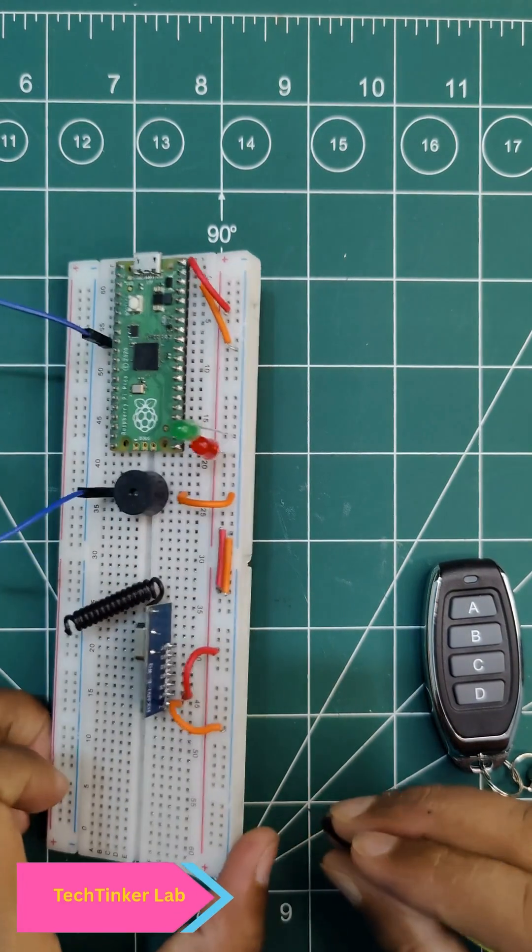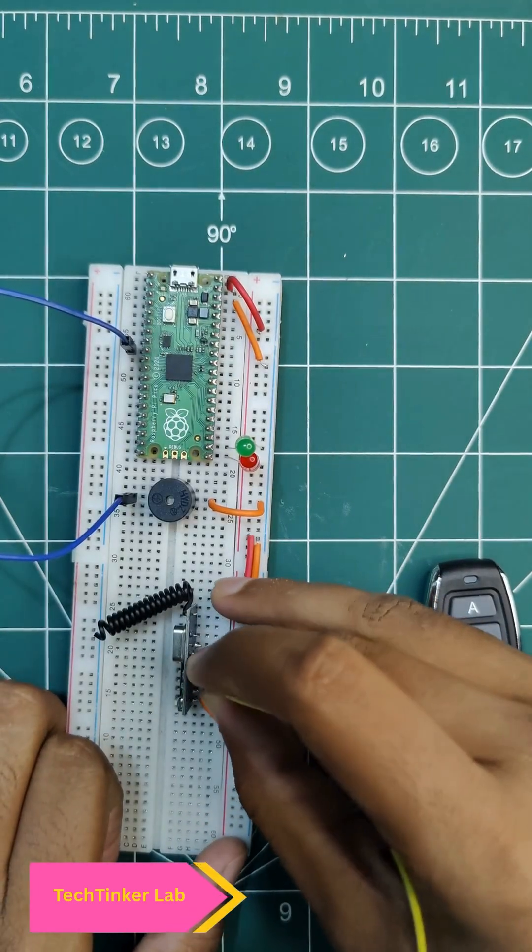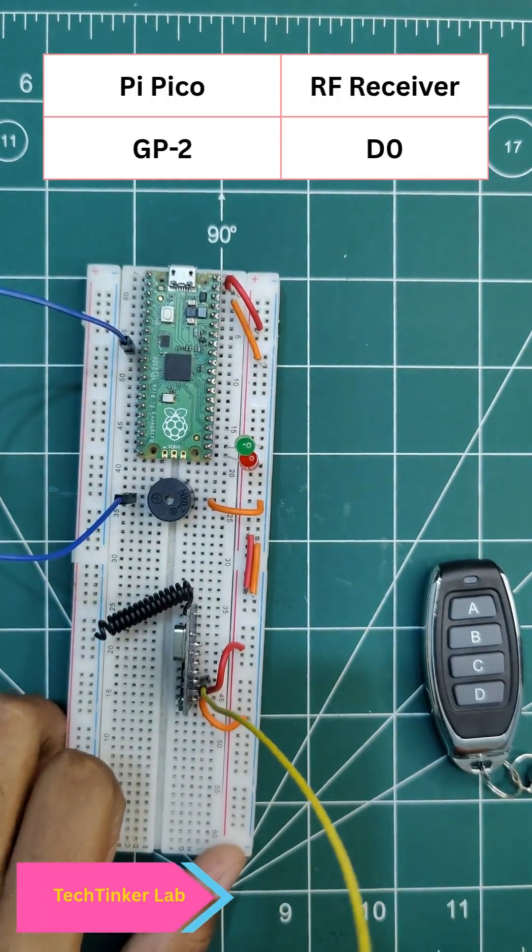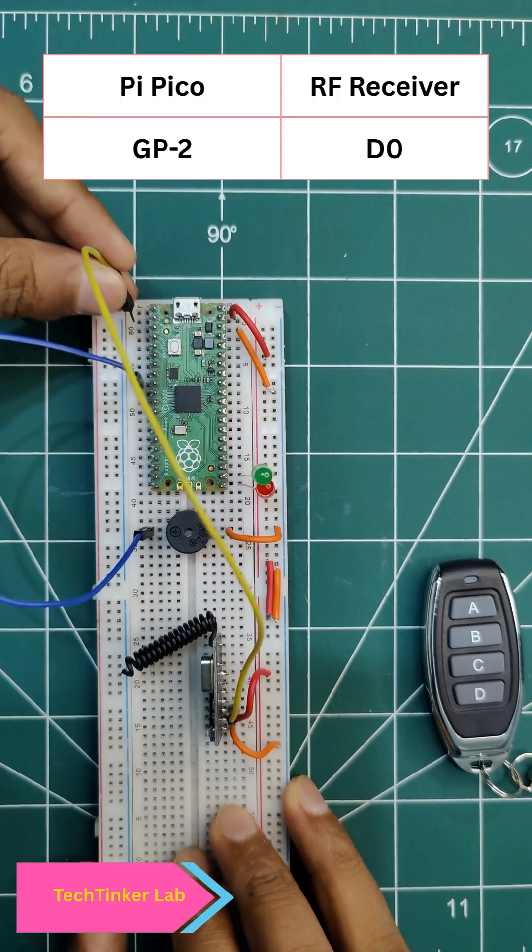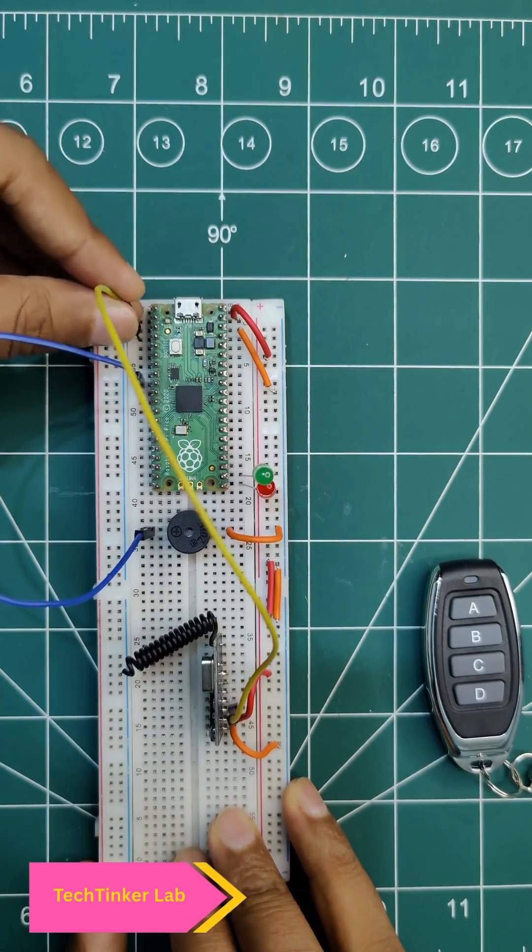Now let's connect the first which is D0. So D0 goes here to GP2. This is 0, 1, ground, and 2.